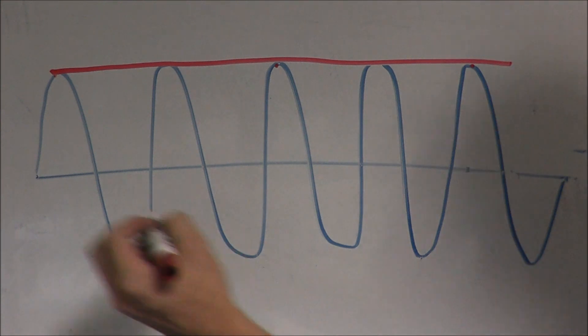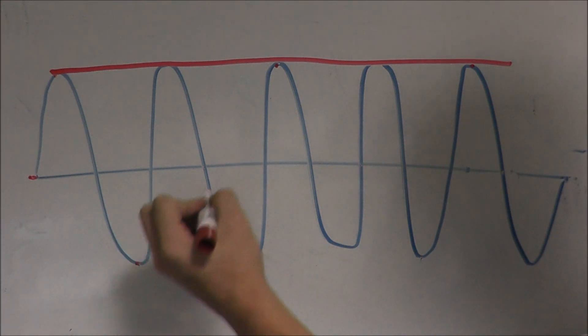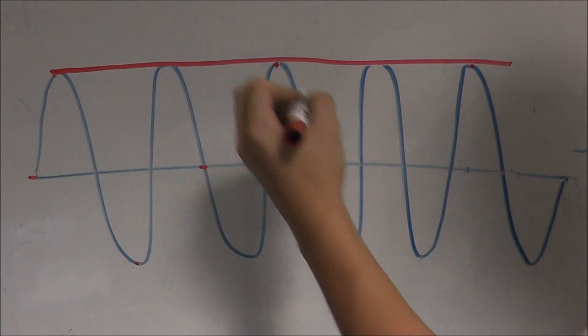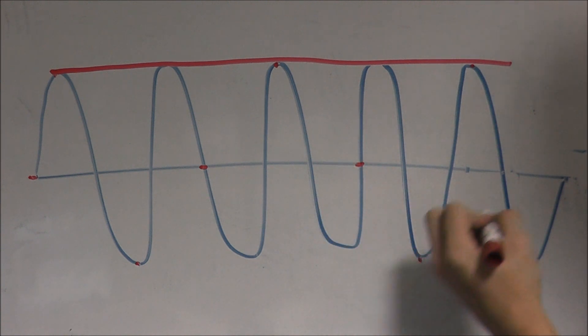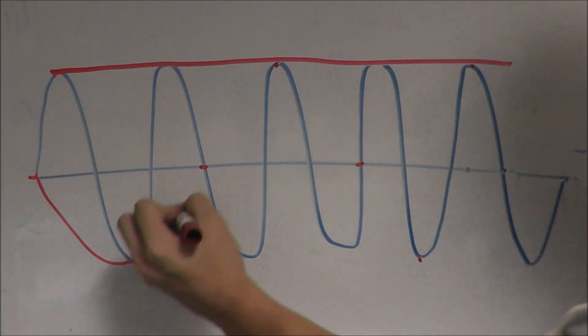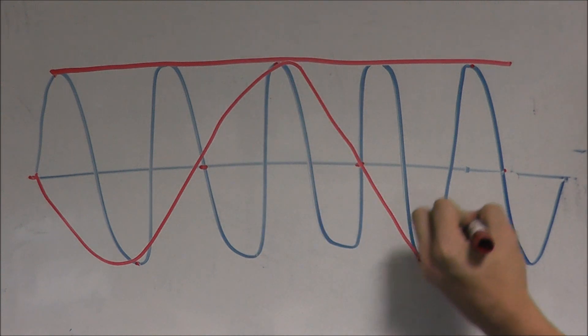Another example would be three samples per two periods, or a sampling rate one and a half times the frequency, which, as you may remember, is still too slow of a sampling rate. As you could imagine, we get this new waveform of much lower frequency.